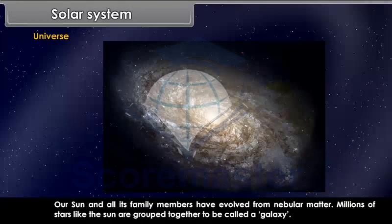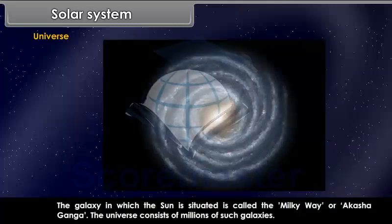Our sun and all its family members have evolved from nebular matter. Millions of stars like the sun are grouped together to be called a galaxy. The galaxy in which the sun is situated is called the Milky Way or Akash Ganga. The universe consists of millions of such galaxies.